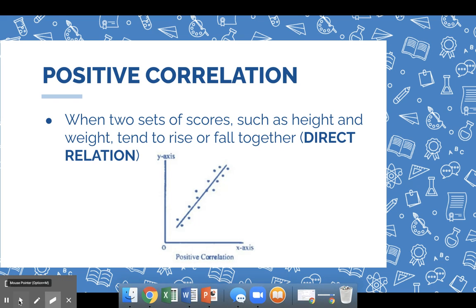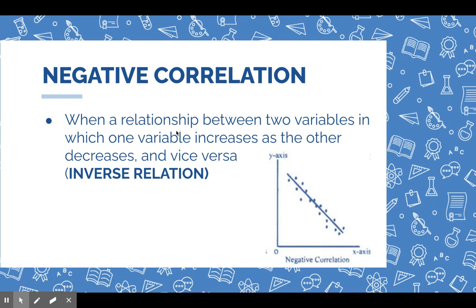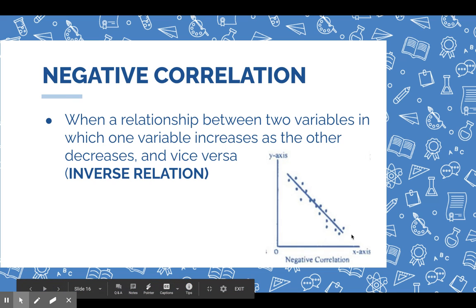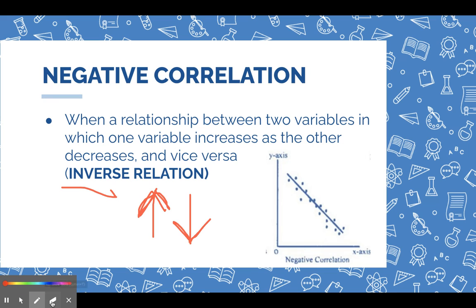With negative correlation you have a different situation — this is an inverse relation, like the word inverse in math. They're going opposite directions. It's when one variable increases and the other decreases. So on a chart you'd see a line going this way. For example, if increased TV watching leads to decreased weight, those arrows are going opposite directions — they are inversely related. That's going to be a negative correlation.